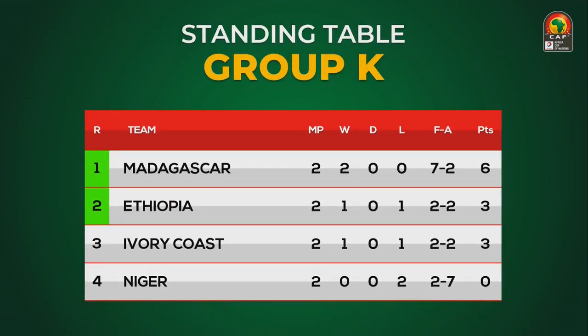In group K, the top of the table is Madagascar, followed by Ethiopia in second, Ivory Coast and Niger below it.